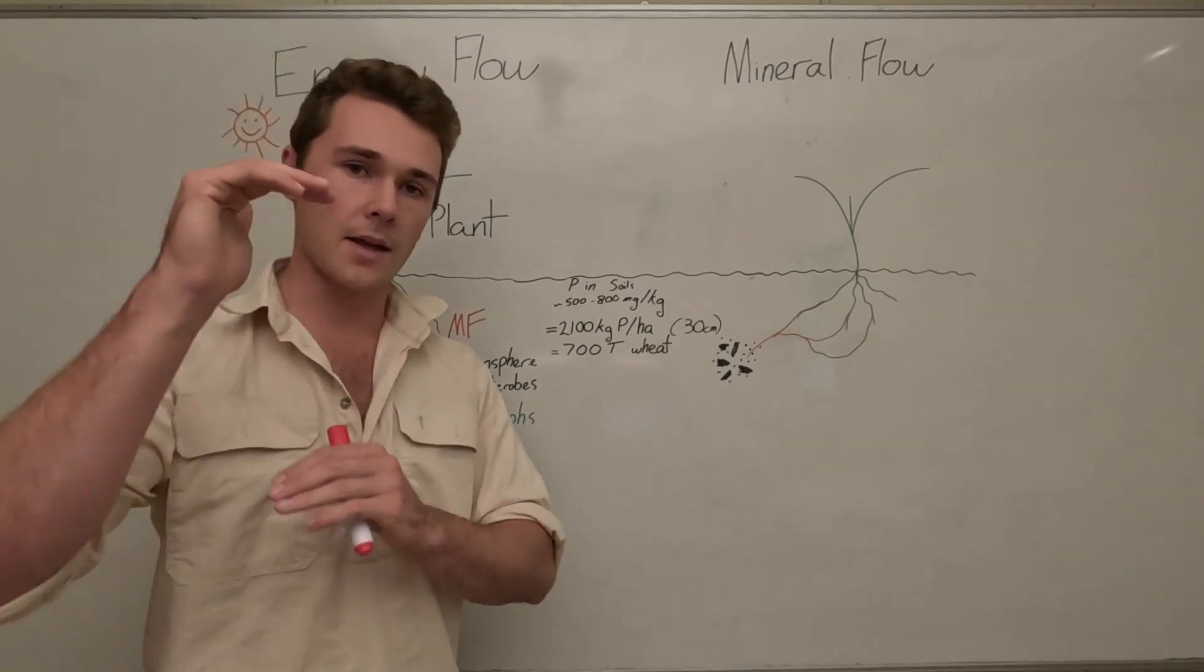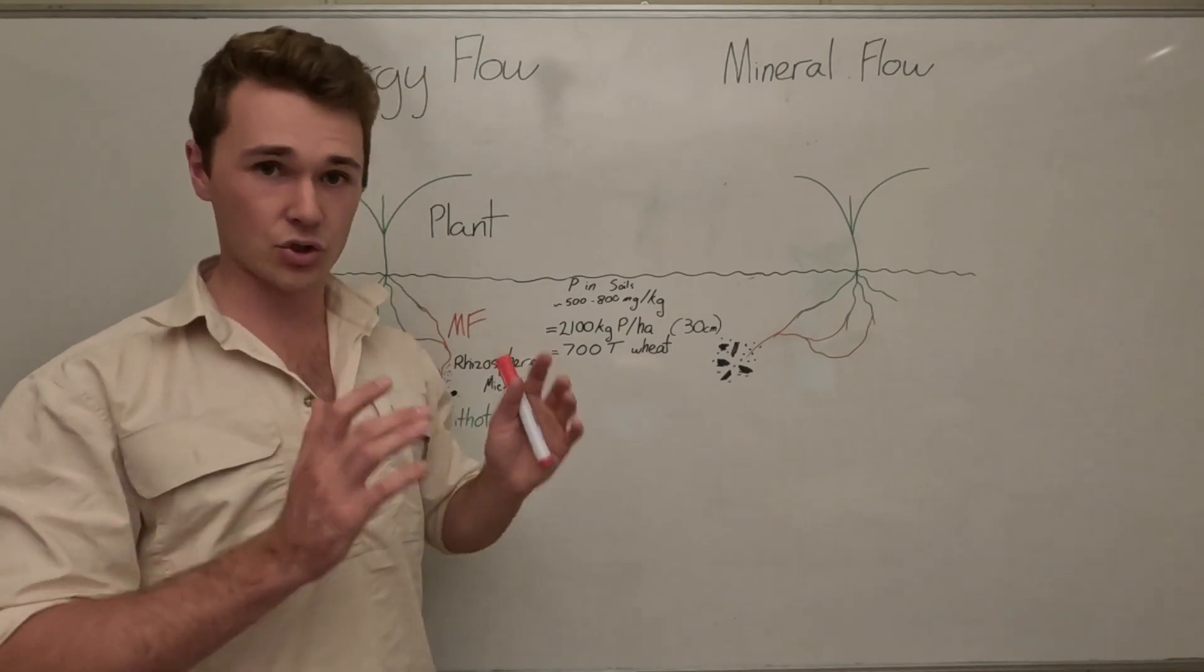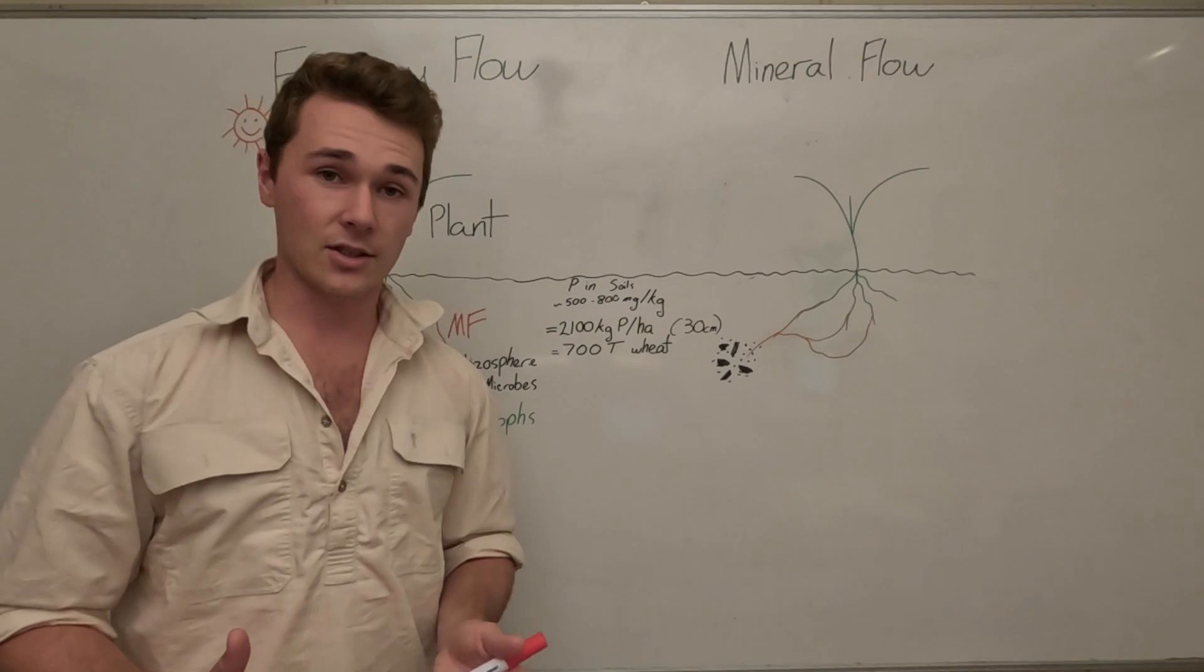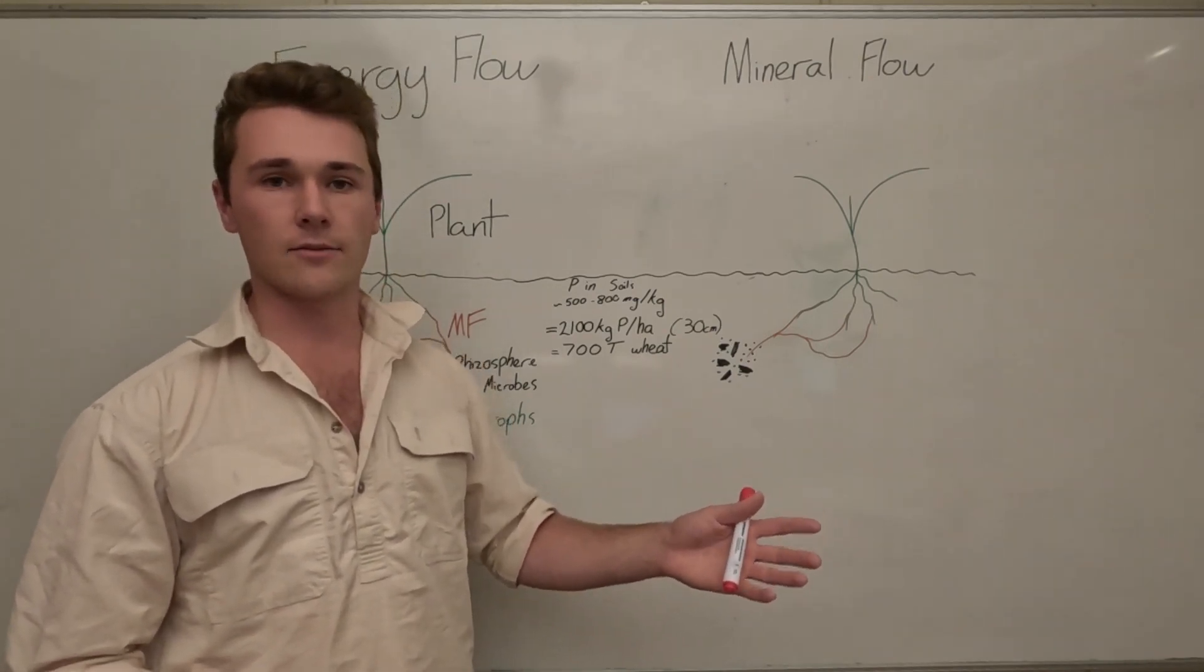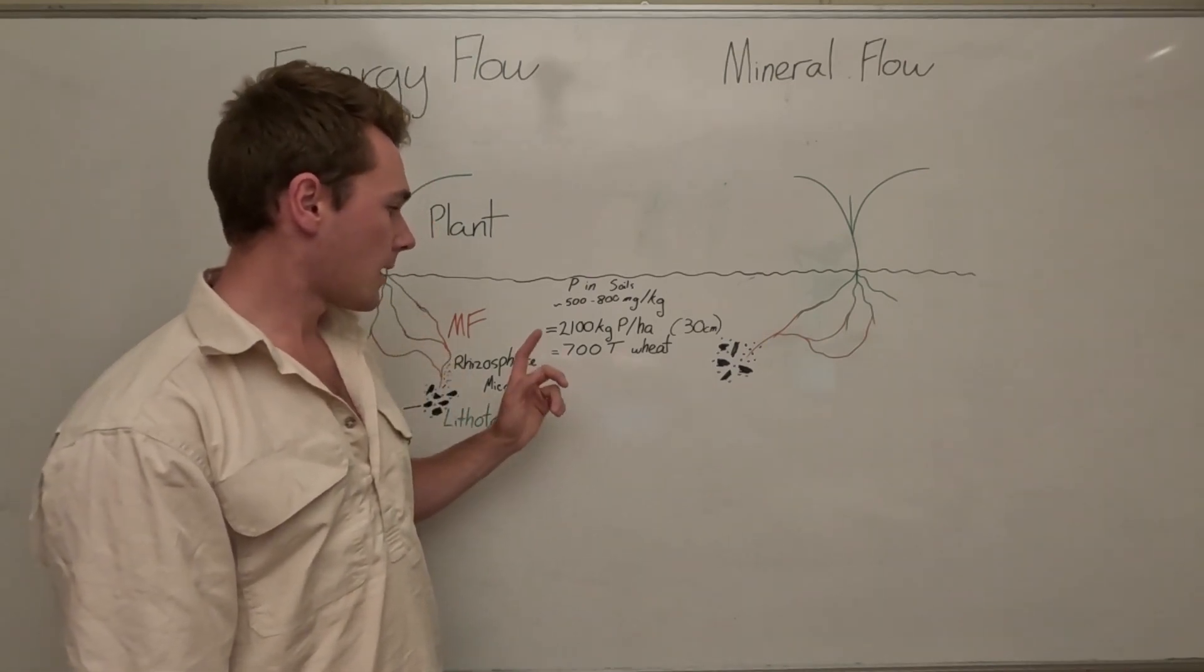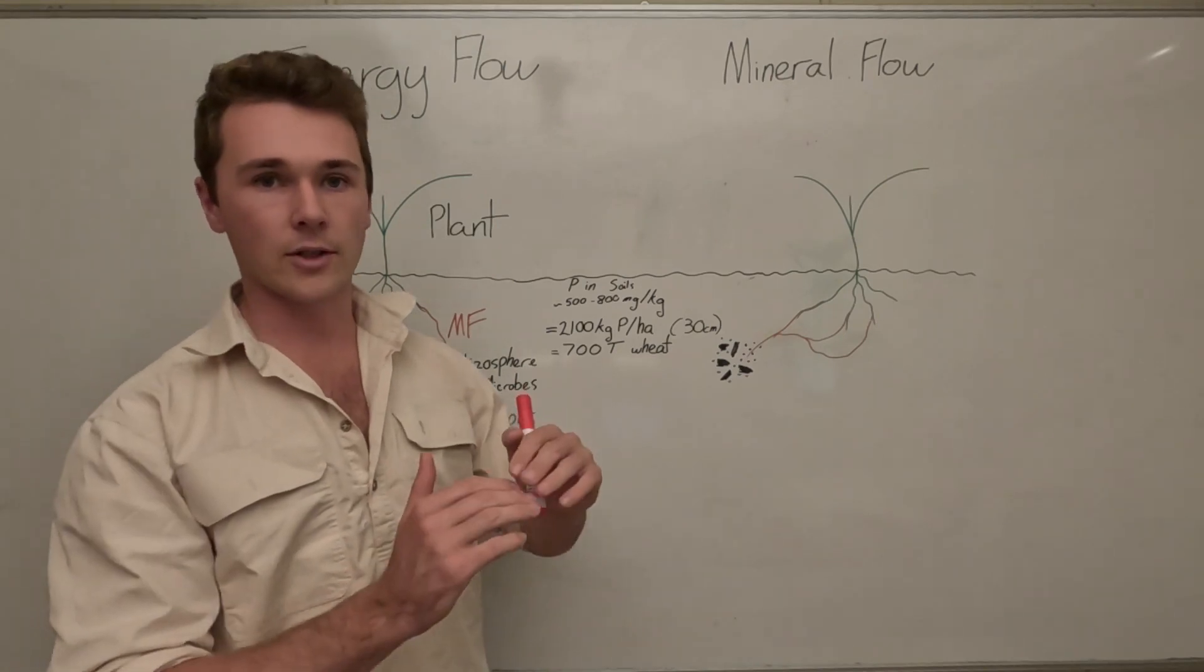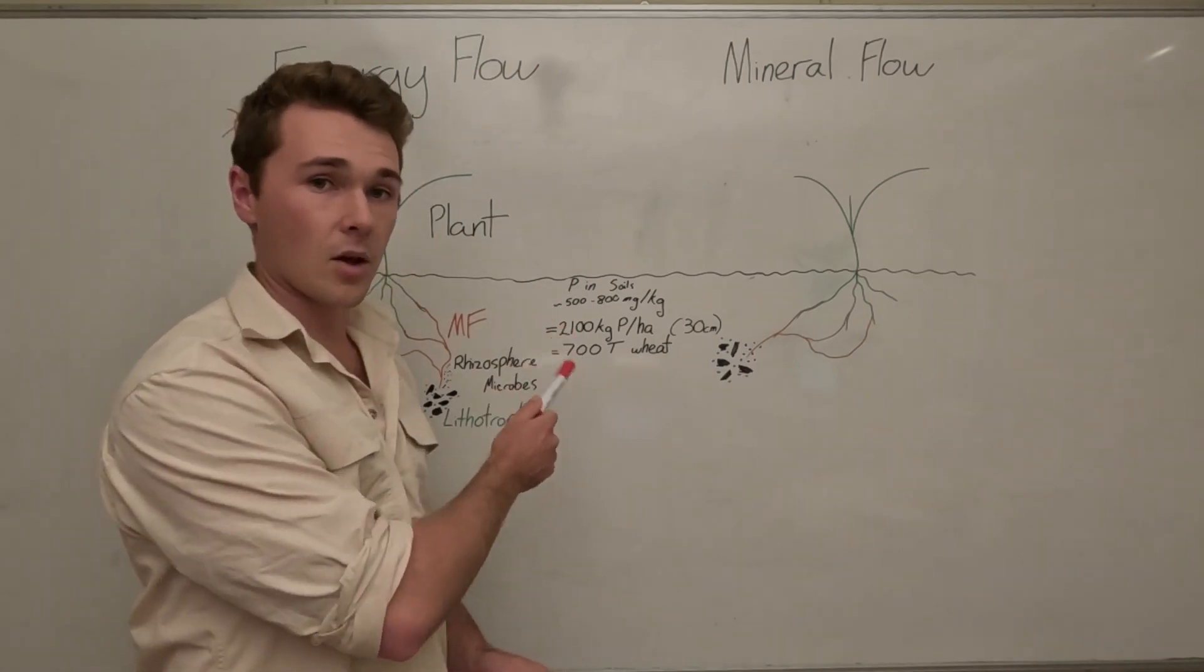When we consider our soils to about 30 centimeters deep, there's actually about 2,100 kilos of straight phosphorus, which is pure straight phosphorus, it's not phosphate. When we consider how much wheat this could produce, considering like a three kilo phosphorus per ton removal rate within our wheat, that's actually enough to supply 700 tons of wheat from that one hectare just to 30 centimeters deep. Considering some soil profiles might be a lot deeper or shallower than that, this number is probably a lot higher.